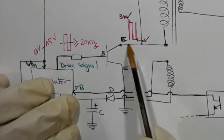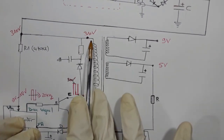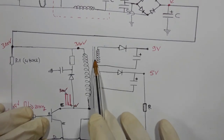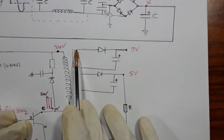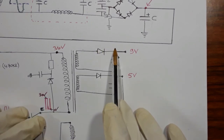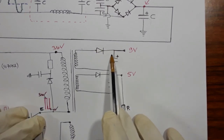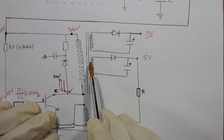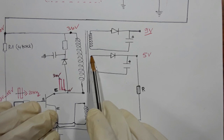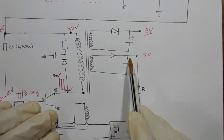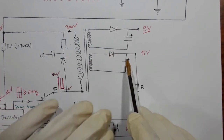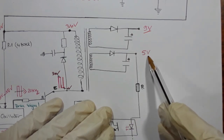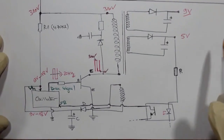The current passes through the transformer and the energy transfers to the secondary coils. On one output, the current passes through a diode and a filtering electrolytic capacitor, giving us 9 volts. On another output, the same working principle applies — current passes through a diode and is filtered through an electrolytic capacitor — giving us 5 volts.